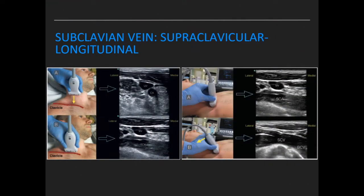On the longitudinal view of the subclavian vein, the needle should only be advanced once all structures including the pleura are visualized on a single image. The probe is slid towards the clavicle to visualize the IJV and the subclavian artery, and then tilted to visualize the subclavian vein before cannulation.